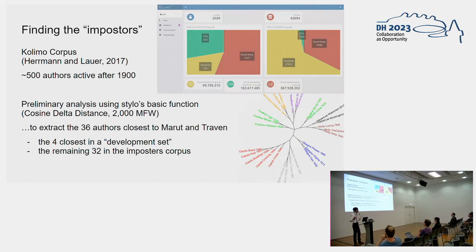One problem is finding the imposters. In our case, we used the corpus Colimo that has about 500 authors active in the period of our interest and did a preliminary stylometric analysis to identify the authors that are closest to Marut and Traven. We didn't take all of the 36 closest authors but isolated four of them into what we call the development set, together with 32 imposters.